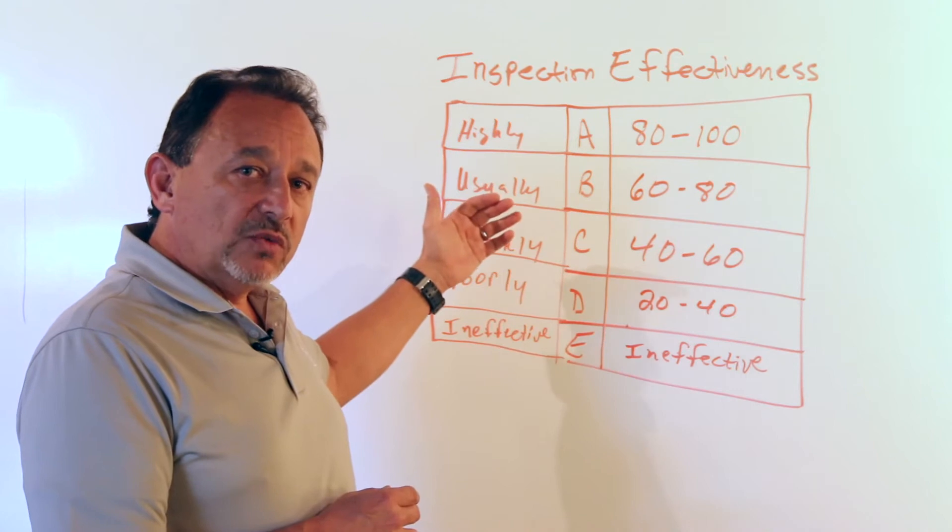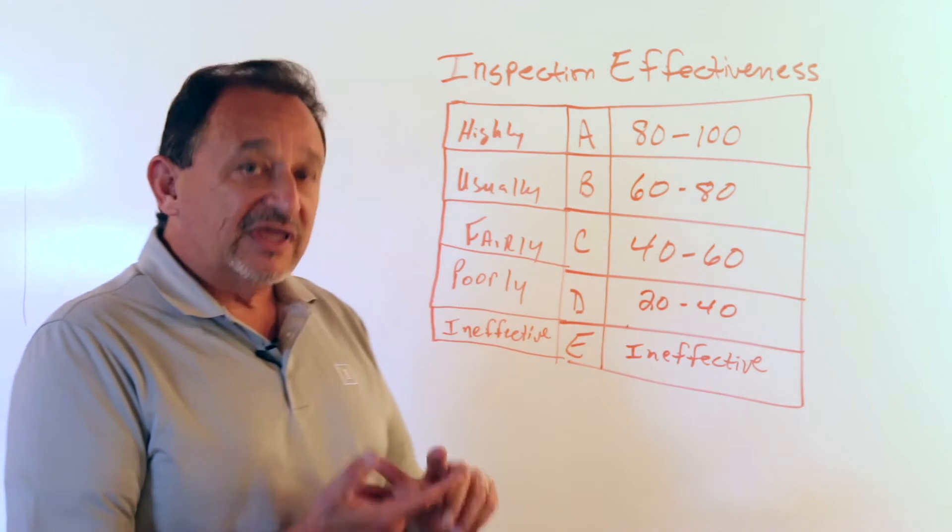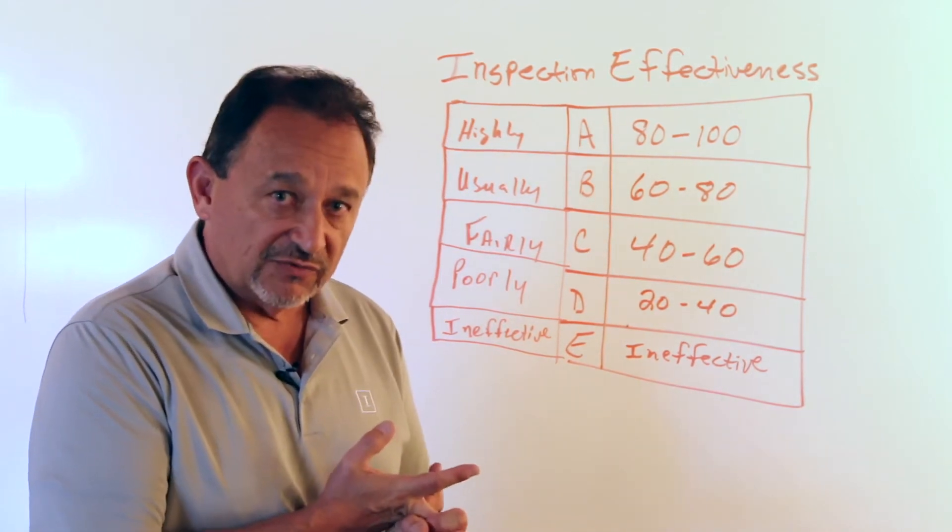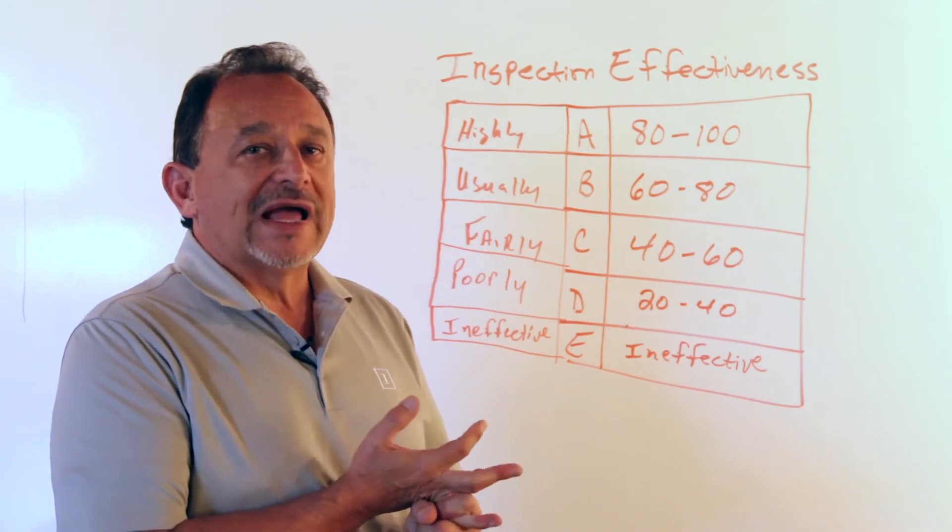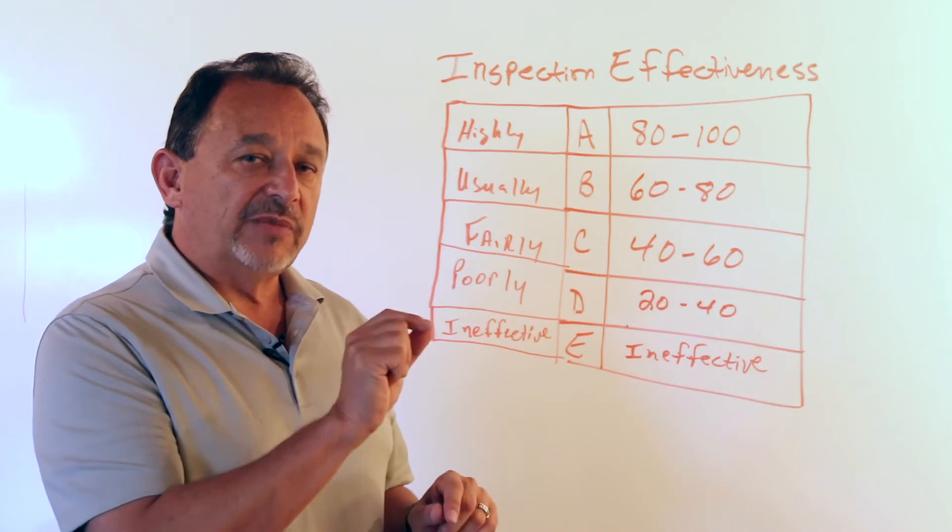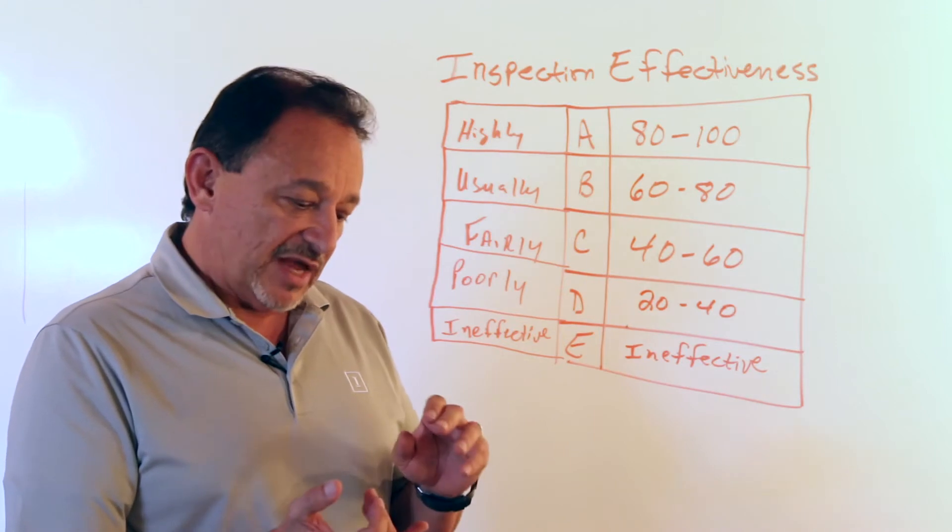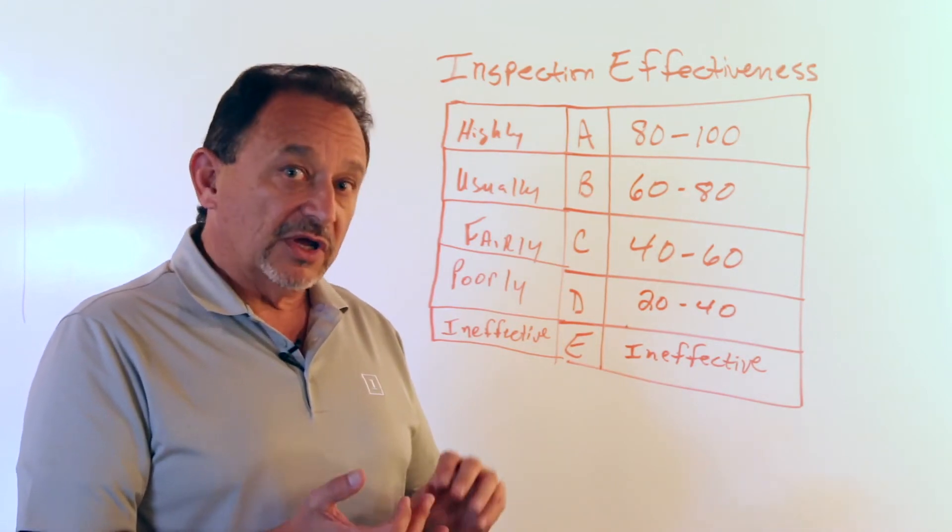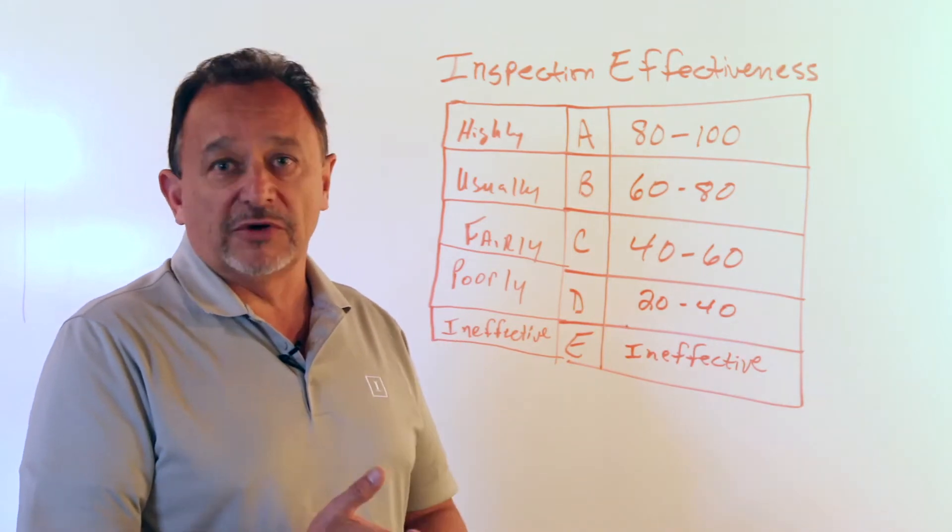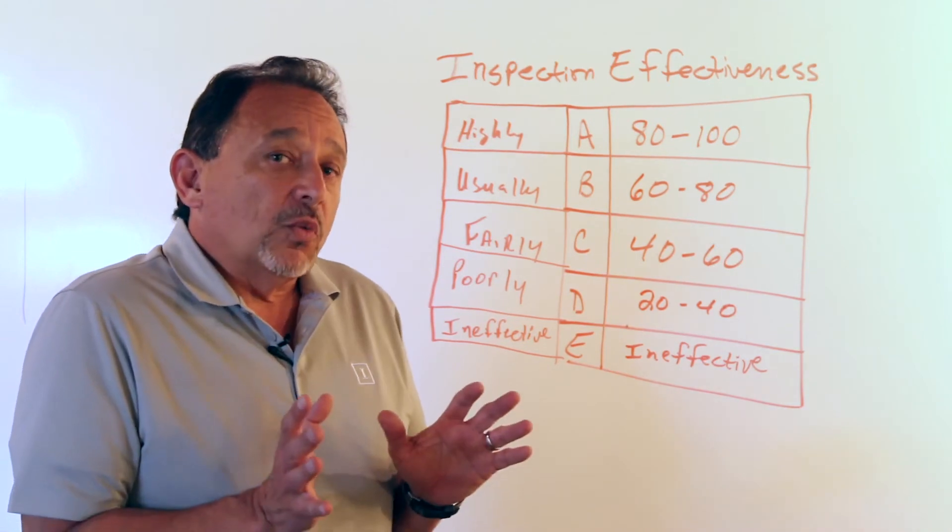So one of the keys to a good RBI program is doing a good damage mechanisms review, so we want to make sure competent people are reviewing the equipment and anticipating, predicting what type of damage you would expect in those different areas. And they may do that based on experience, industry data, past inspection histories, thermodynamics, simple chemistry, metallurgy, and so forth.